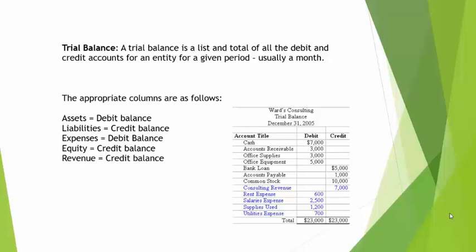When preparing a trial balance, we need to know which accounts are listed under which column. Assets, revenue, and drawing have debit balances, so we input these accounts in the debit column. Others like liabilities, expenses, and equity are input in the credit column.